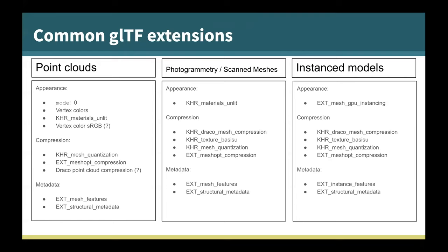I want to point out some common GLTF extensions we use a lot. For point clouds, not many people actually use GLTF for point clouds, but it's actually a great format — just change the primitive type to zero instead of the default four for triangles to get point rendering, then use vertex colors for point colors. The extension KHR_materials_unlit is often good for point clouds since they typically don't have normals. For compression, we've seen good results with Meshopt, which is built on the mesh quantization extension. Draco also theoretically supports point clouds; the GLTF extension is currently restricted to triangles but could be extended in the future.